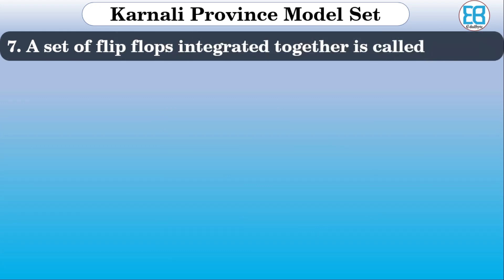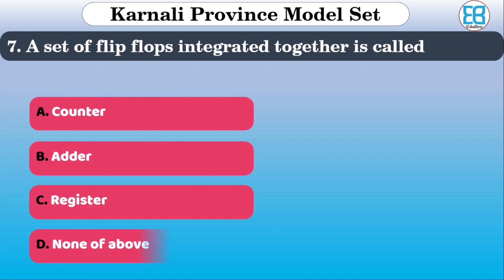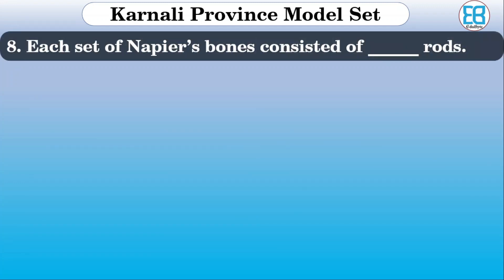A set of flip-flops integrated together is called what? The options are: flip-flop, integrated circuit, counter, register, none of the above. The correct option is register — a set of flip-flops makes a register.